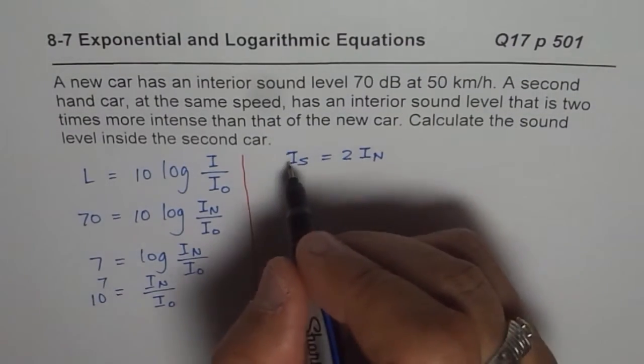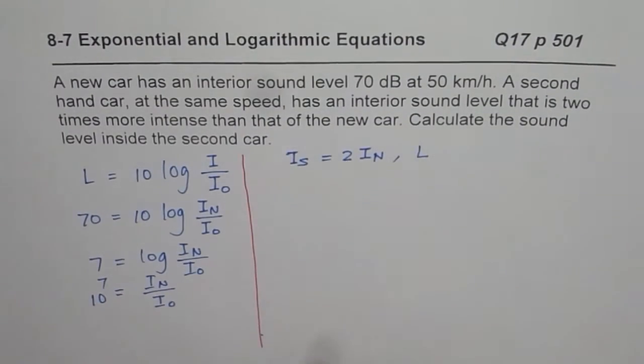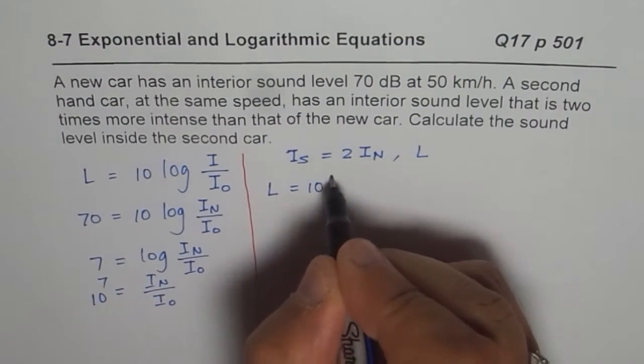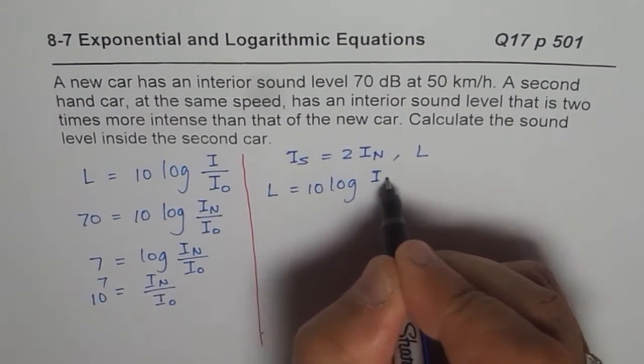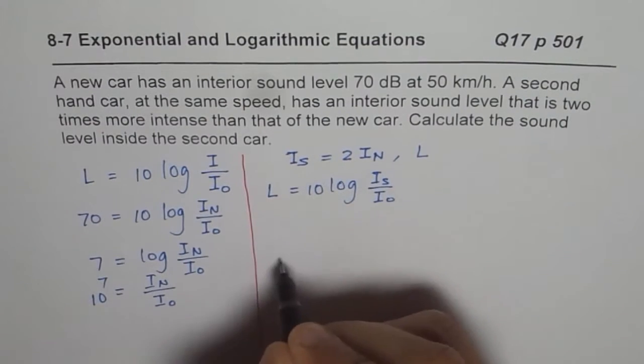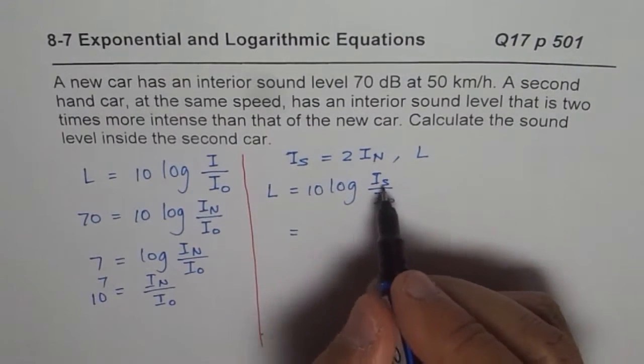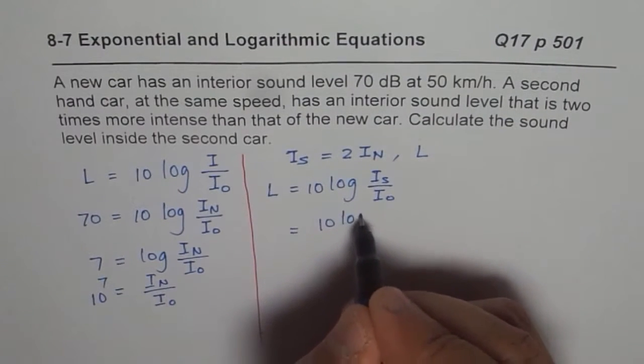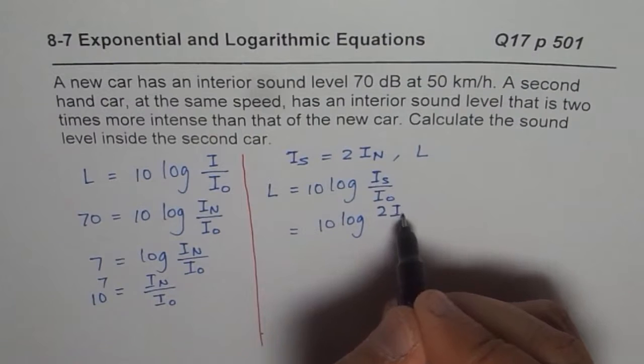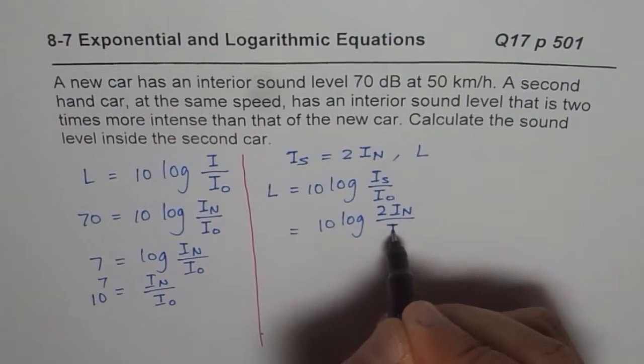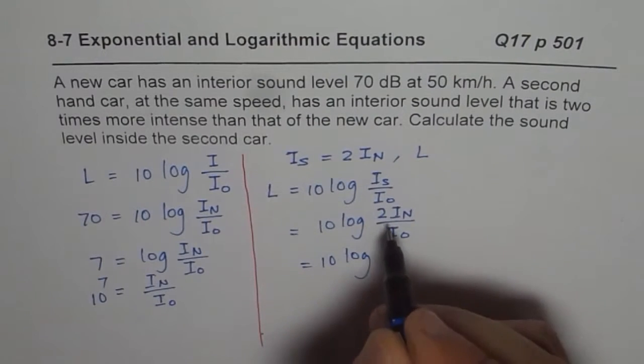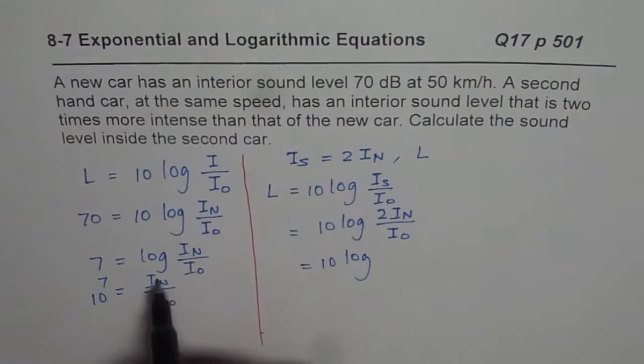And what we want to find here is loudness L. So we will again use the same formula. We can say L equals to 10 log of intensity of second-hand car over I0. Now since we are given that this intensity is two times, we can replace it by that. So we have log of two times I of new car over I0.